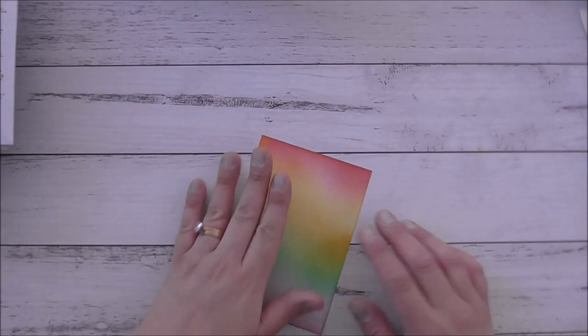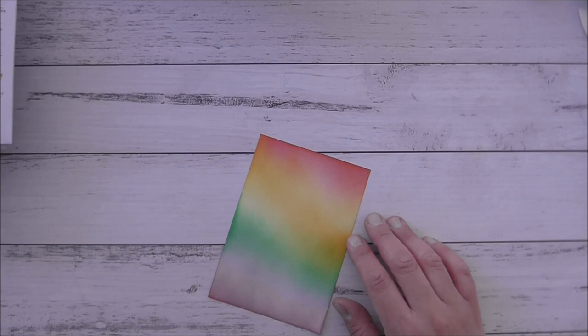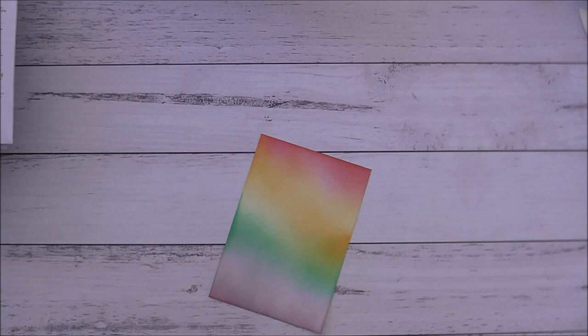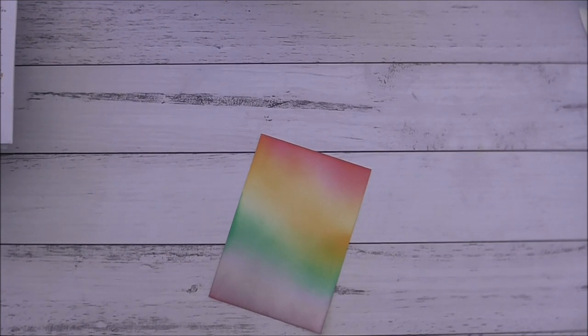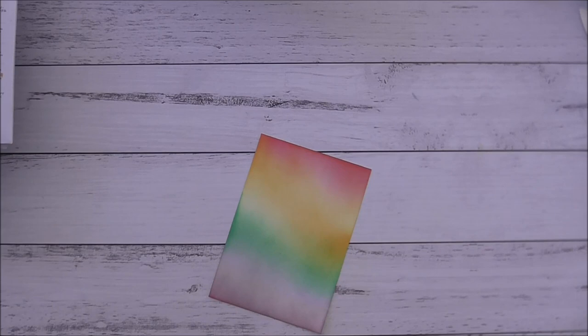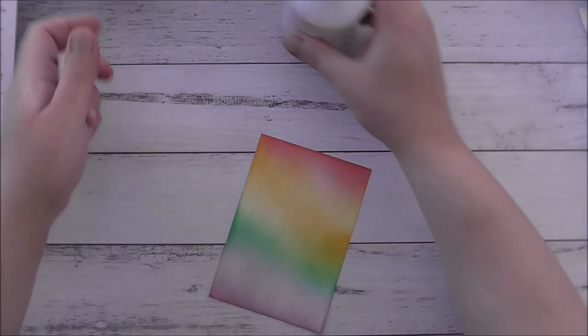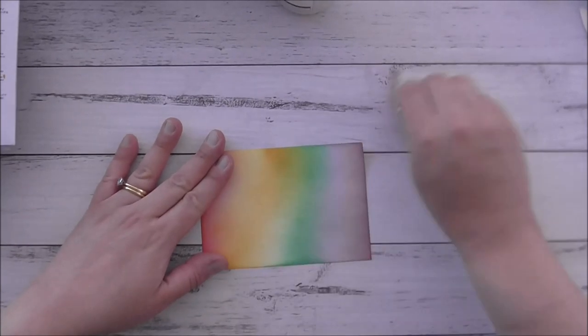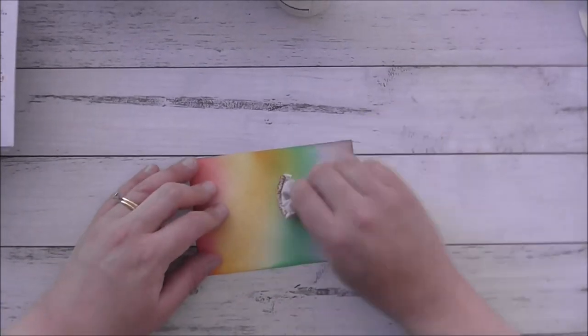Now what I want to do with this is I'm going to use my embossing buddy, and what I'm going to do, it's an anti-static powder tool, so basically I'm going to use that to apply over the top of my panel here.